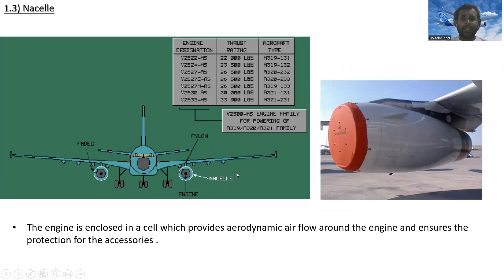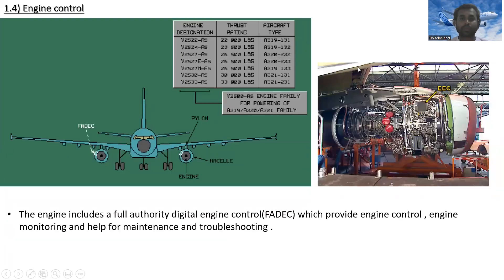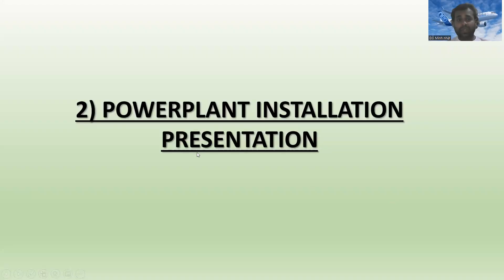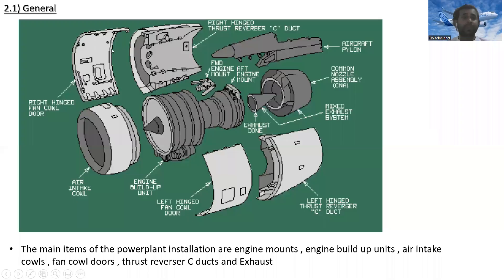The nacelle encloses the engine, providing aerodynamic airflow around the engine and ensuring protection for the accessories. For engine control, the engine includes a Full Authority Digital Engine Control — FADEC — which provides engine control, engine monitoring, and assistance for maintenance and troubleshooting. Short videos about the V2500 engine and the CFM56 engine covering the EEC are also available on the channel.